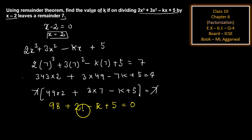98 plus 21 is 119, plus 5 equals 124 minus k equals 0. Then the value of k equals 124.